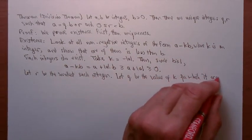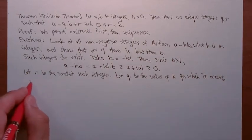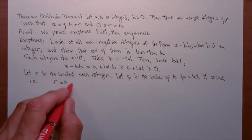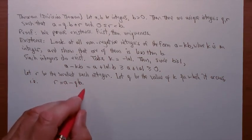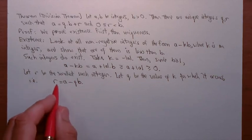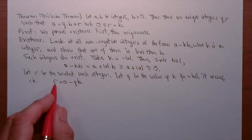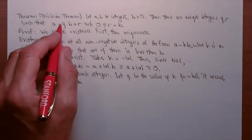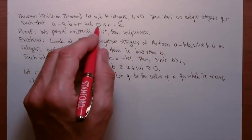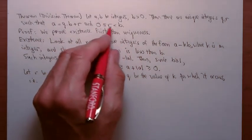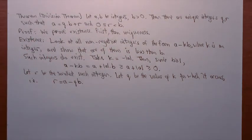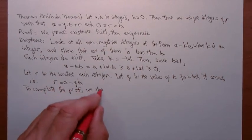Well, having shown that there are such integers by producing a K that gives me such an integer, I can choose the smallest one. Let R be the smallest such integer. And let Q be the value of K for which it occurs. I.e., we'll have R equals A minus QB. So with R and Q defined in this way, I will indeed have A equals QB plus R. If I can show that R lies between 0 and B in this fashion, then I'll have proved the existence.